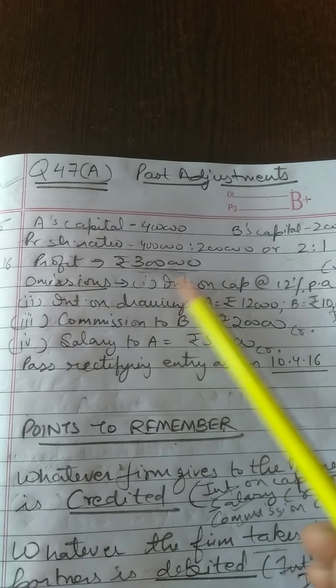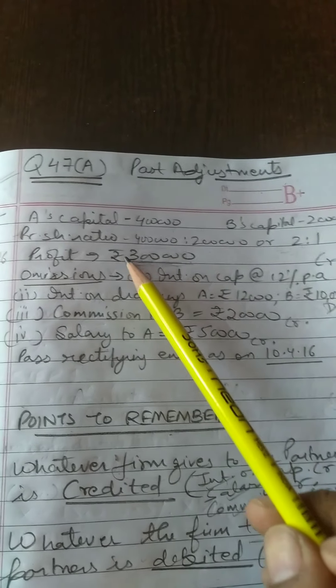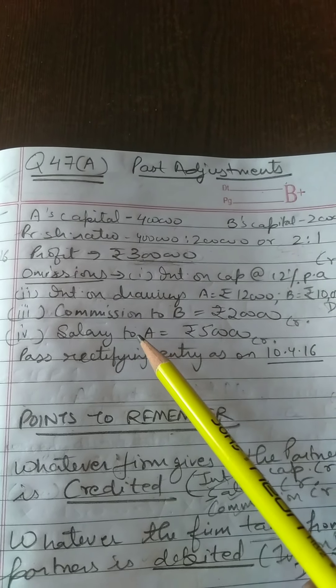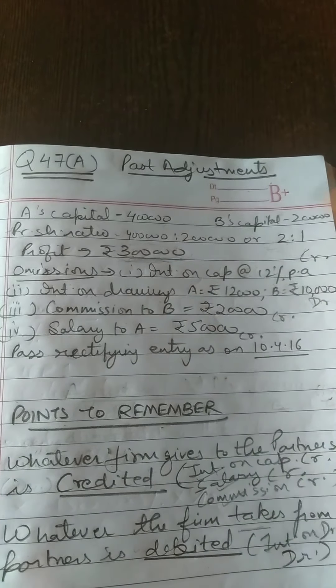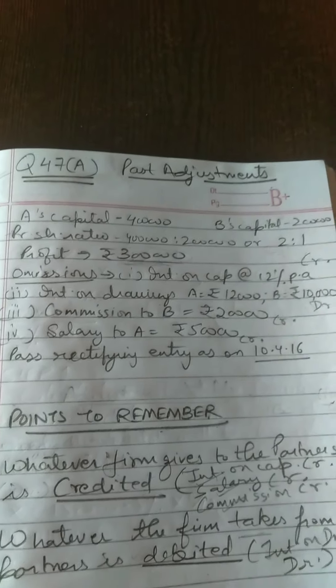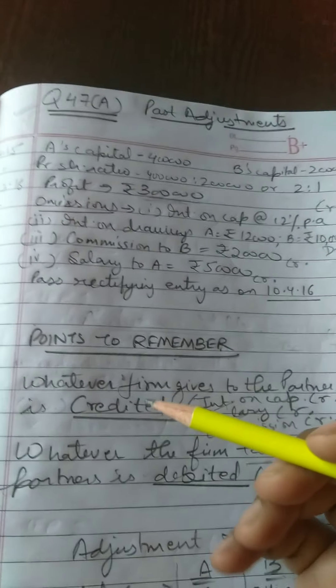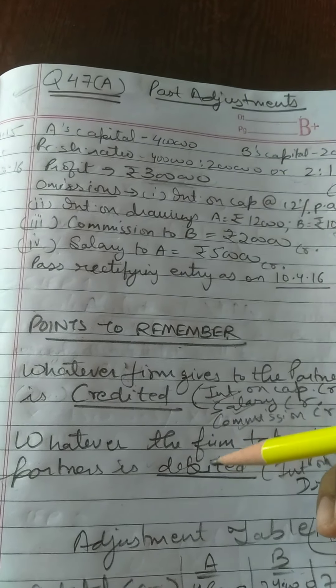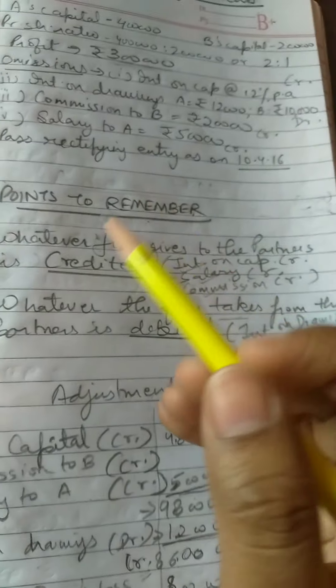Without deducting these things, you have distributed the profit to the partners. Obviously this will be a wrong distribution. When you deduct or add these things, one partner would receive either more or the other would receive less. That's why we make a rectification entry. Two key points to remember: which amount should be credited and which should be debited, because we have to make an adjustment table.